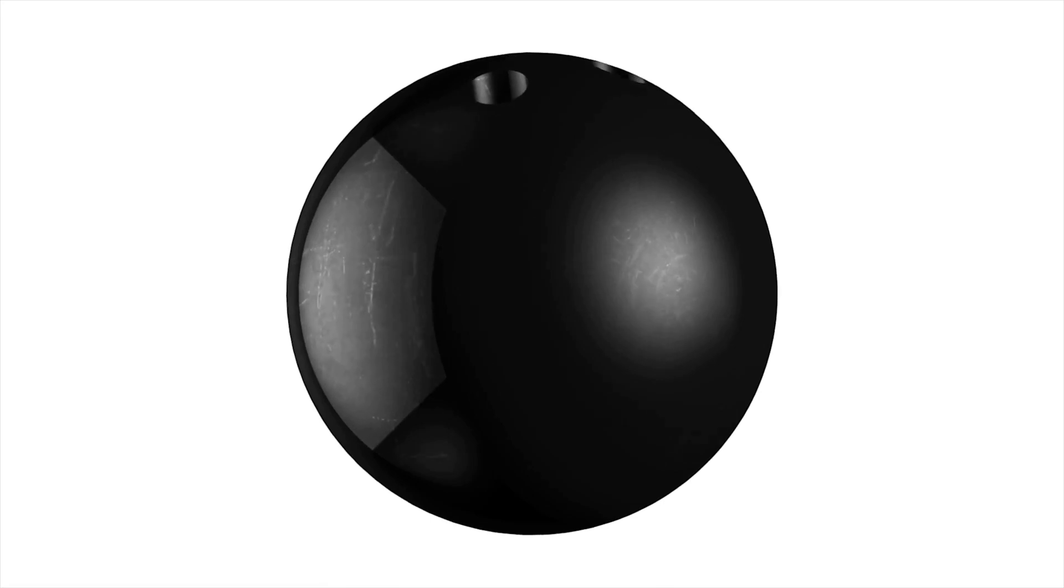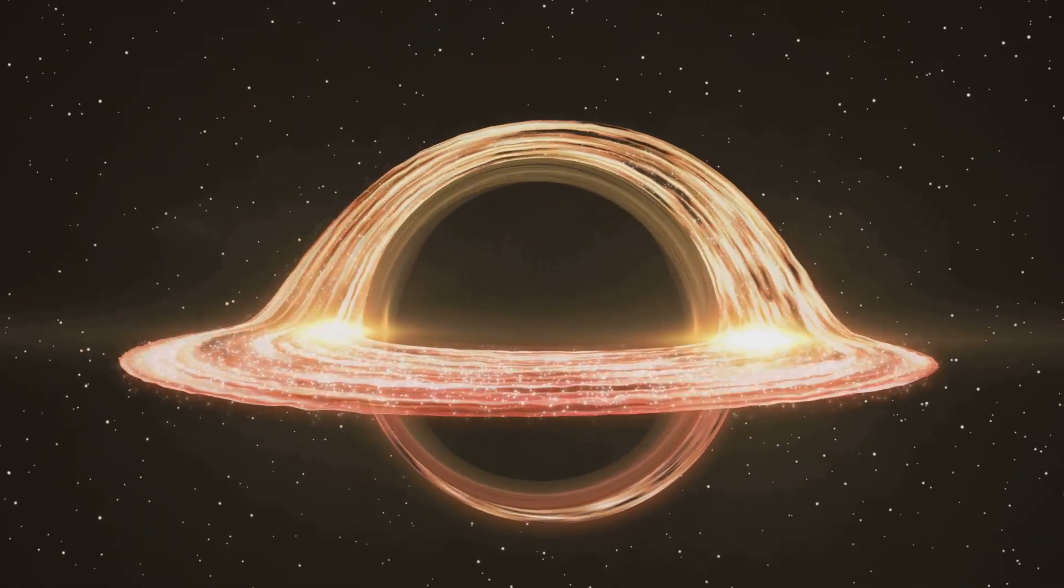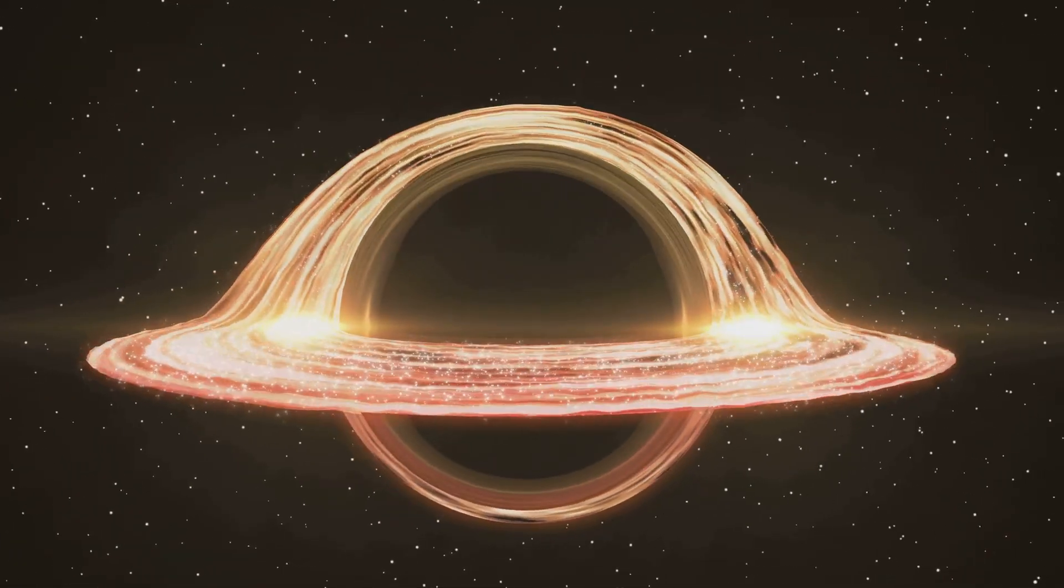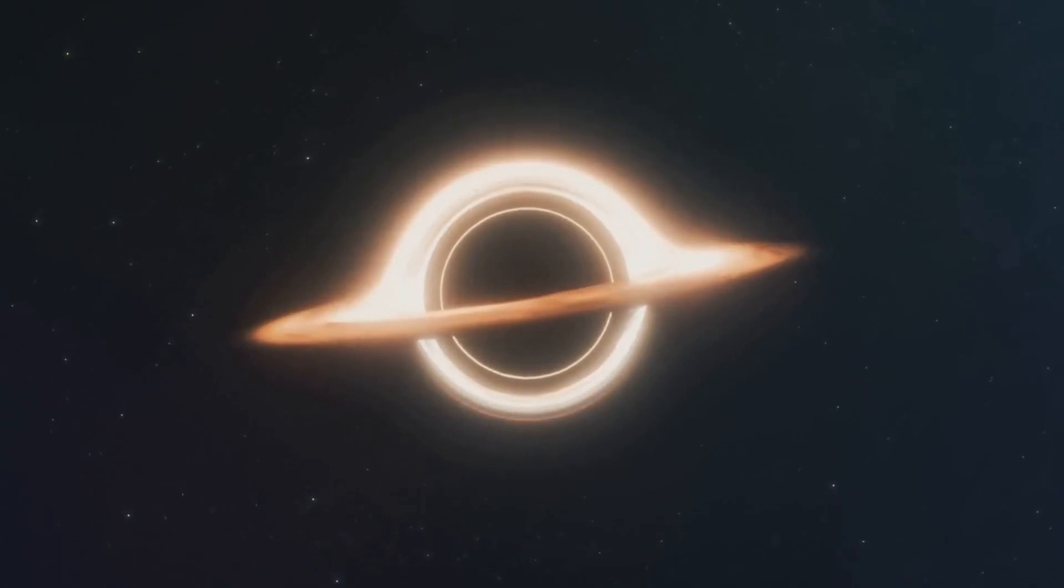Imagine a bowling ball placed on a trampoline, causing the fabric to sag. This indentation represents the distortion of space-time caused by a massive object like a black hole. The greater the mass, the deeper the indentation, and the stronger the gravitational pull.